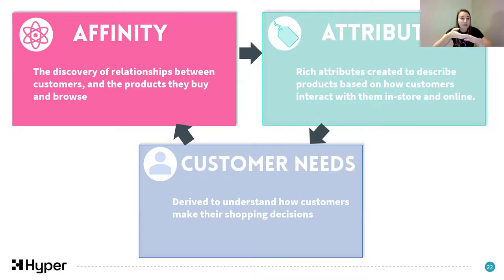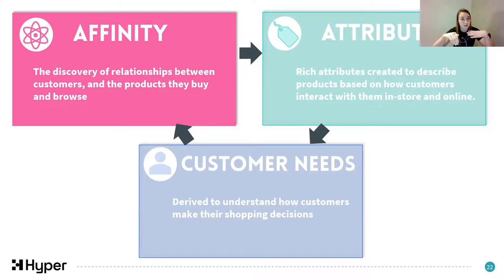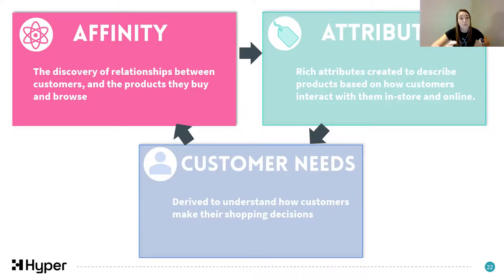Once you've got basket affinities and customer affinities, you can combine them to infer whether combinations of products are complementary to each other - meaning they're really likely to be bought in the same visit, making for good product bundles or recommendations. When you use basket affinities and customer affinities together in another way, you can infer whether products compete against each other, meaning demand can be transferred between them. These competing products are the ones that make for really good substitutions.